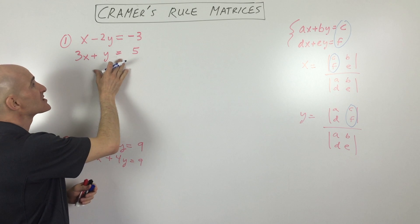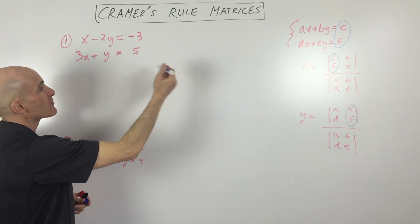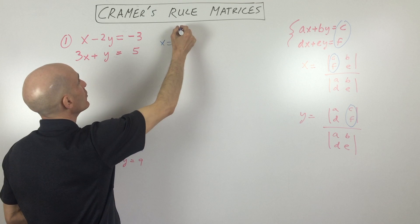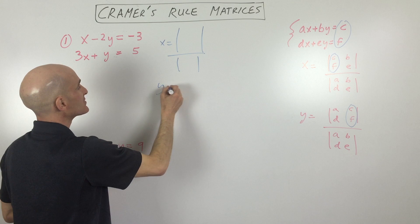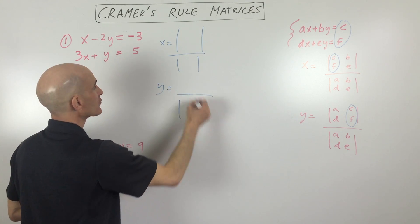So we're trying to solve this system of equations here. So what I'm going to do is I'm going to set up Cramer's rule. We've got x equals the determinant of - do the numerator and denominator, and I'll do the same thing for y. So I'll show you kind of how we work through this.